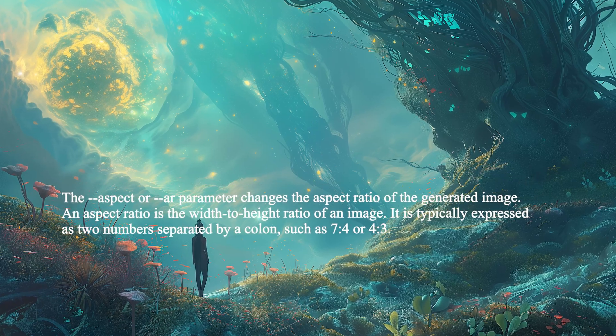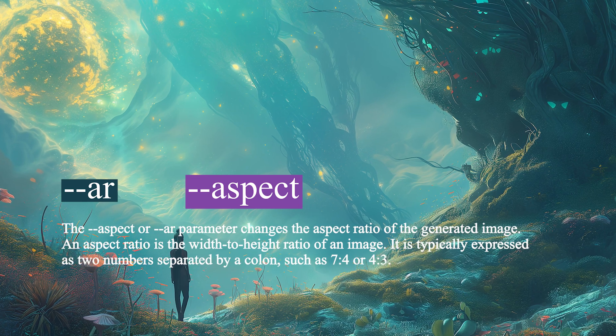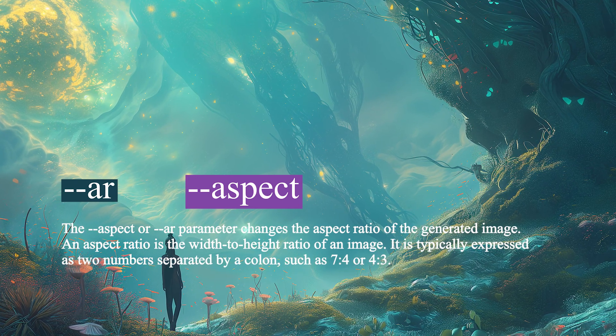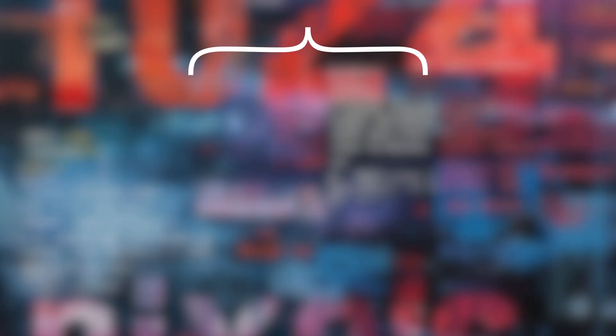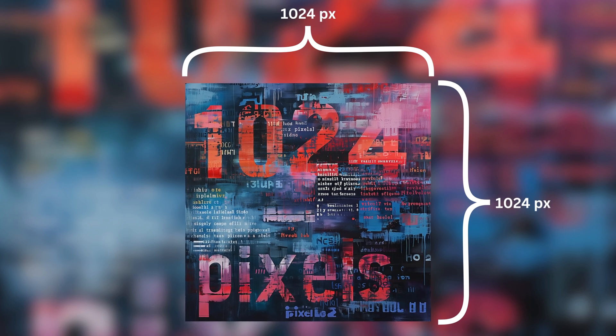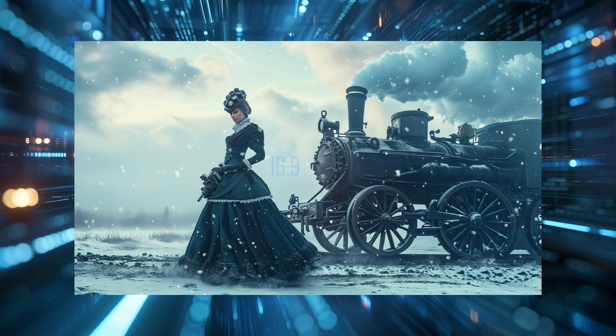Now let's see which arguments can be used with V6. First up is --ar, which stands for aspect ratio. It means that you control the shape of your image — whether you want it wider or taller. The default is, as usual, the ratio 1 to 1, which produces an image that is 1024 by 1024 pixels. If you make your image taller or wider, the image will be elongated in one direction but smaller in the other. For example, a 16 by 9 image will be 1456 by 816 pixels.